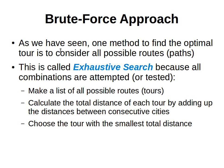This approach is known as the brute force approach. One method to find the optimal tour is to consider all possible routes or paths. This is called exhaustive search because all combinations are attempted or tested. We make a list of all possible routes, calculate the total distance of each tour by summing the distances between consecutive cities, and then choose the tour with the smallest total distance.